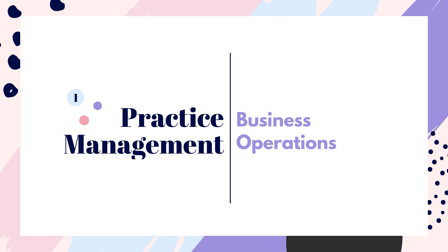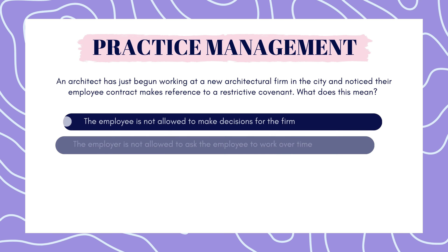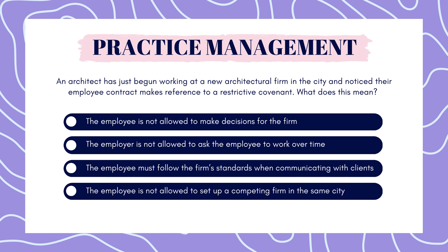First up is practice management. An architect has just begun working at a new architectural firm in the city and noticed their employee contract makes reference to a restrictive covenant. What does this mean? The employee is not allowed to make decisions for the firm. The employer is not allowed to ask the employee to work overtime. The employee must follow the firm standards when communicating with clients. Or, the employee is not allowed to set up a competing firm in the same city. Feel free to pause here to answer.